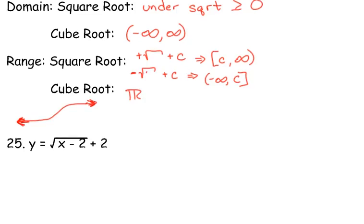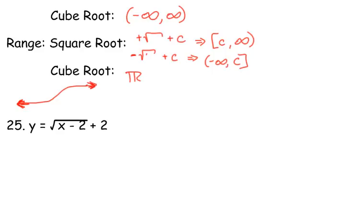So really quickly, let me look at number 25 here. Domain, we got to take what's under the square root, set it greater than or equal to zero, and solve for x. So that says our x values are greater than or equal to two. So that would be from two to infinity,